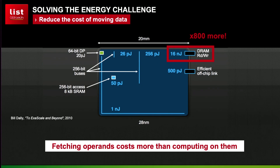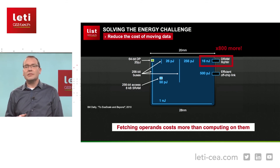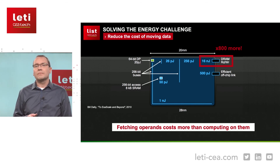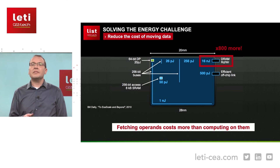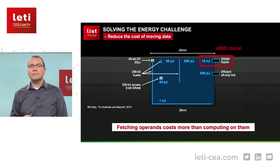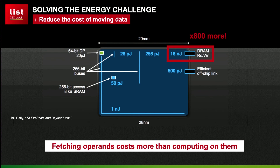So, what is the main challenge with accelerators dedicated to inference applications? The main challenge is the energy dissipation. And in data-centric applications such as AI, the main source of energy comes from moving data. As you can see in this drawing, it costs much more energy to move data than to do computation on it. So the key here is to avoid moving data.